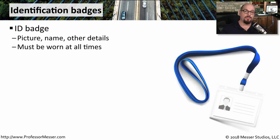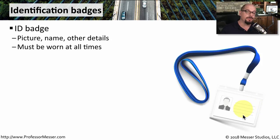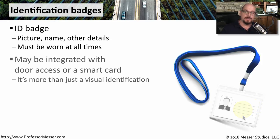One way to keep track of who may be authorized to be in a particular area is to require the use of an ID badge. The ID badge will probably have a picture and the name of a person and other details about that person's employment. This ID badge may also be integrated with your door access, so not only is it a way to identify yourself, it also allows you to gain access through locked doors in your facility.